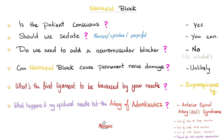What's the first ligament pierced by the needle? The supraspinous ligament. What happens if the epidural needle hits the artery of Adamkiewicz? The patient can suffer from anterior spinal artery syndrome: pain and temperature sensation gone, crude touch gone, motor functions gone — but fine touch, vibration, and proprioception are preserved, because those travel in the posterior columns.